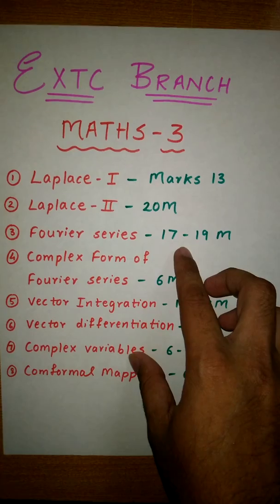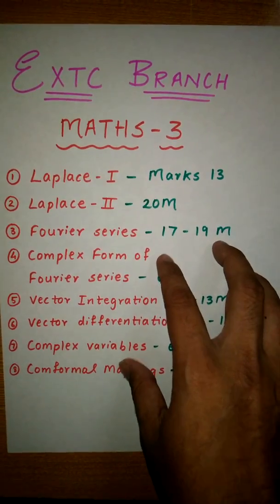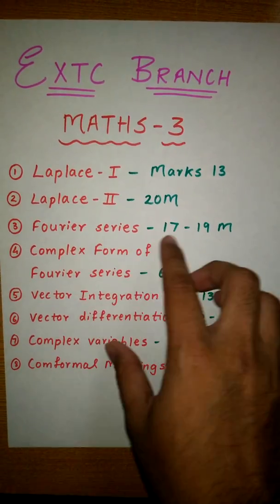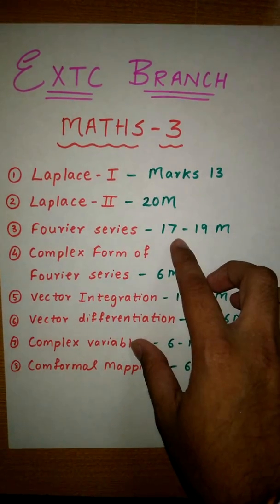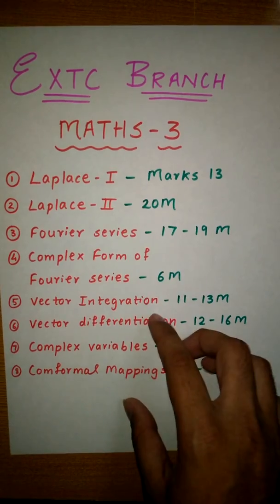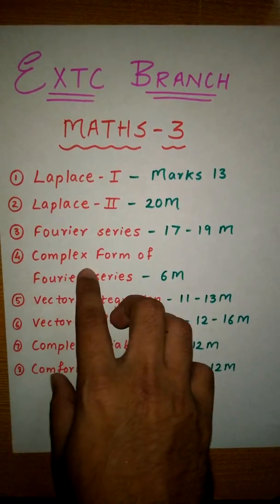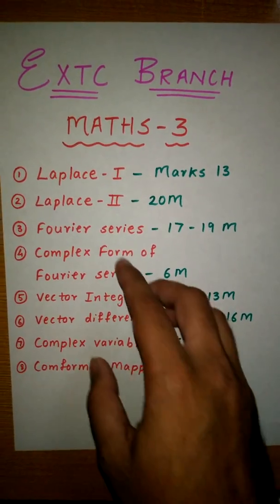Fourier series is an important chapter in M3. It has the maximum weightage of 17 to 19 marks. The next module is complex form of Fourier series.